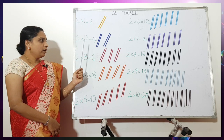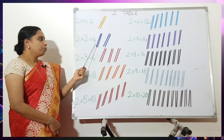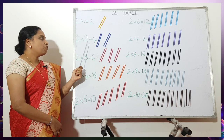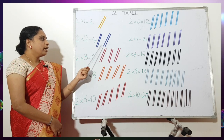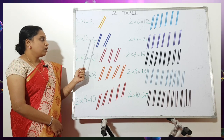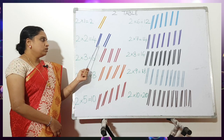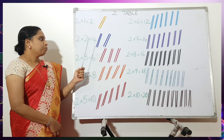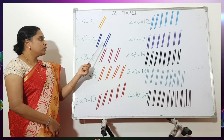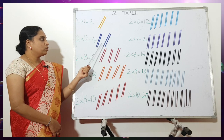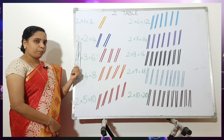Then the next one: 2 times 2 is 4. So when we count the lines — one, two, three, four — the total is 4. 2 times 2 is 4.